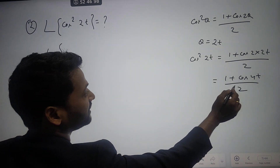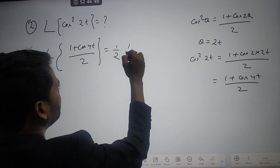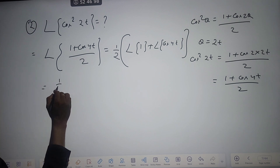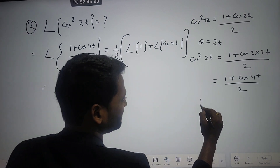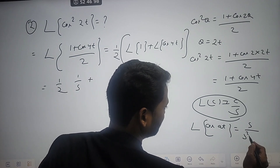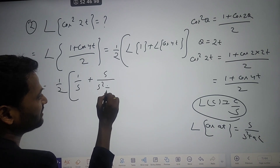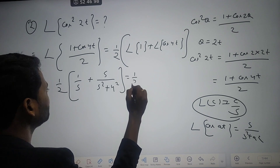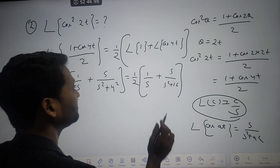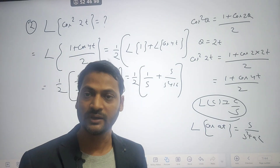So Laplace of cos²(2t) = Laplace of (1 + cos(4t))/2. One half is constant, so we get (1/2)[Laplace of 1 + Laplace of cos(4t)]. Laplace of 1 is 1/s, and Laplace of cos(4t) = s/(s² + 16), since a = 4 and 4² = 16. The final answer is (1/2)[1/s + s/(s² + 16)]. That is all about the Laplace transformation of square trigonometric functions.